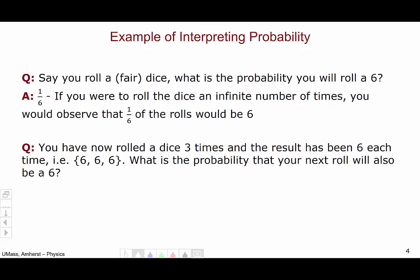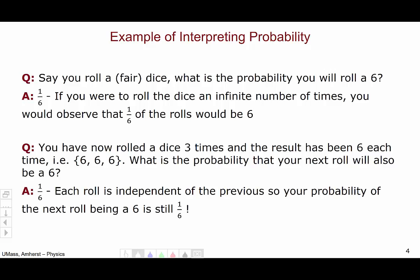Now let's say you have rolled a dice three times, and the result of each roll has been a six, i.e. you have rolled three sixes in a row. What is the probability that your next roll will also be a six? The answer to this is still one-sixth. Each roll is independent of the previous, so your probability of the next roll being a six is still one out of six, regardless of what has happened in the past.